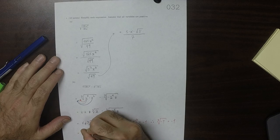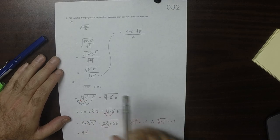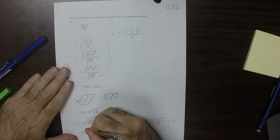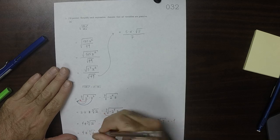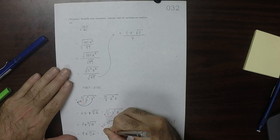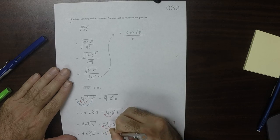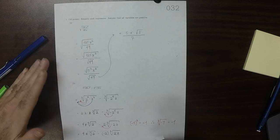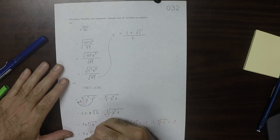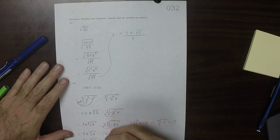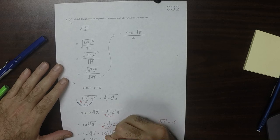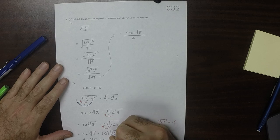So this would be 4z cube root of 2, minus 2 cube root of 2 z, which finally could be written as 4z cube root 2 plus 2 cube root 2 z.